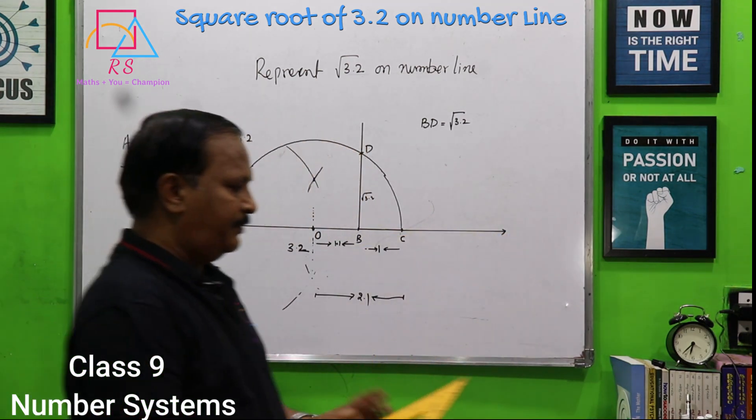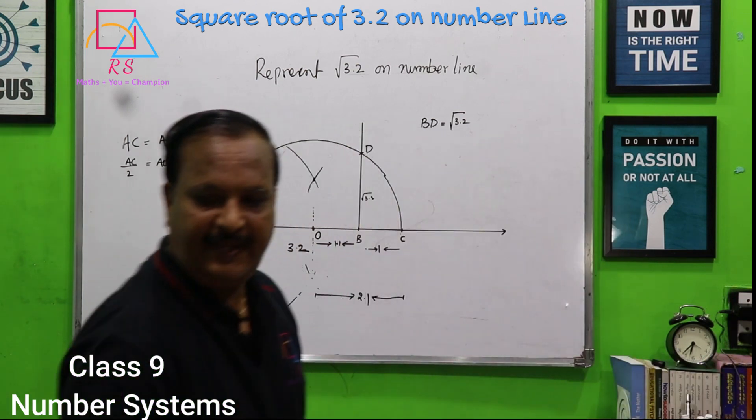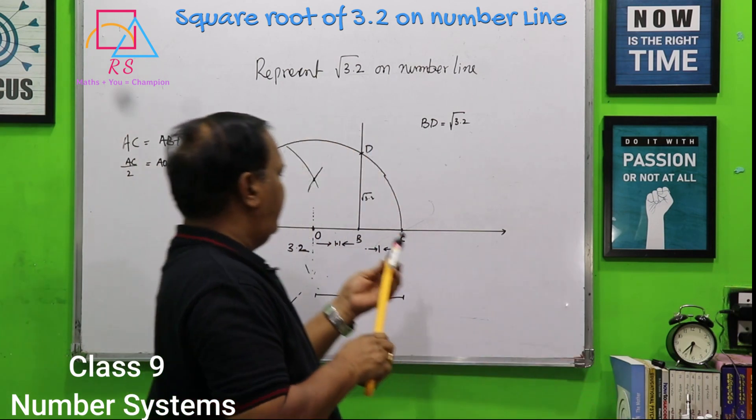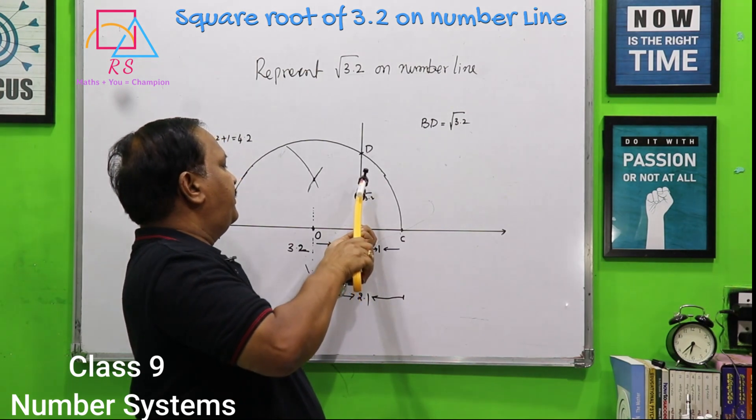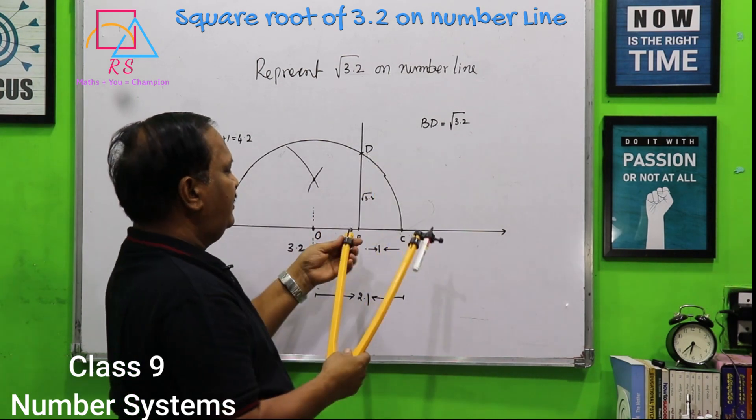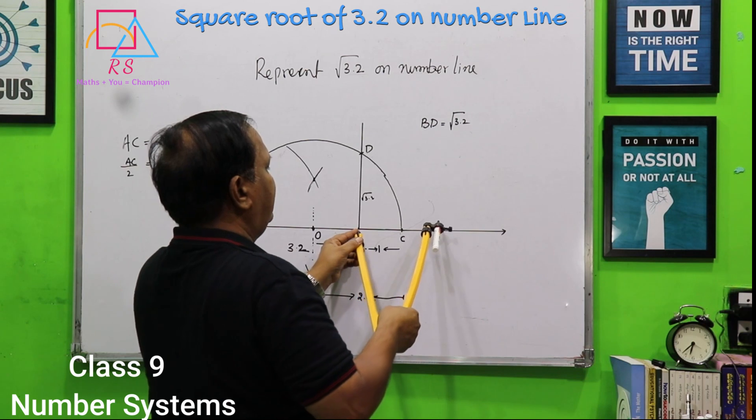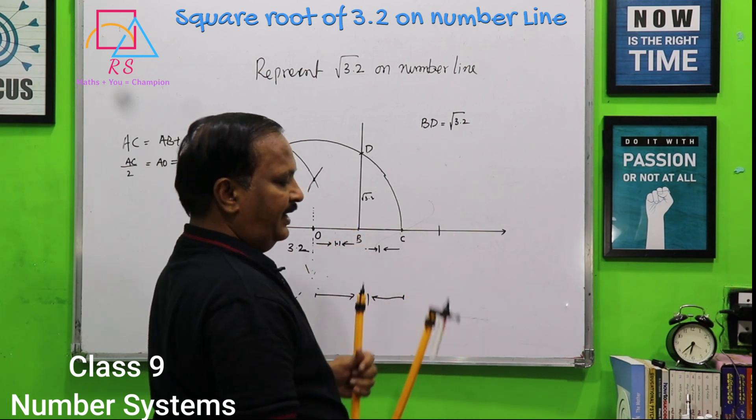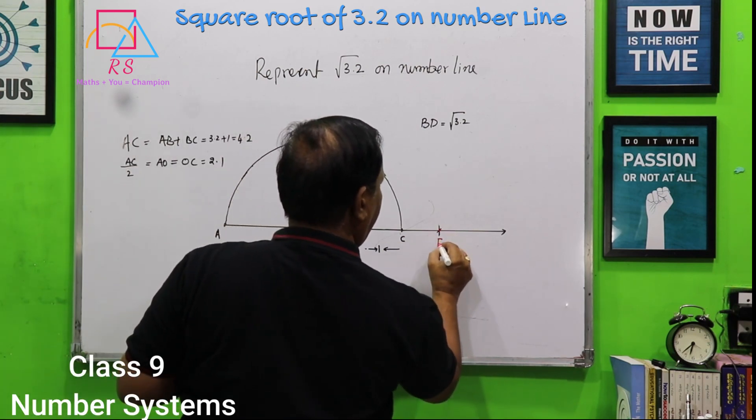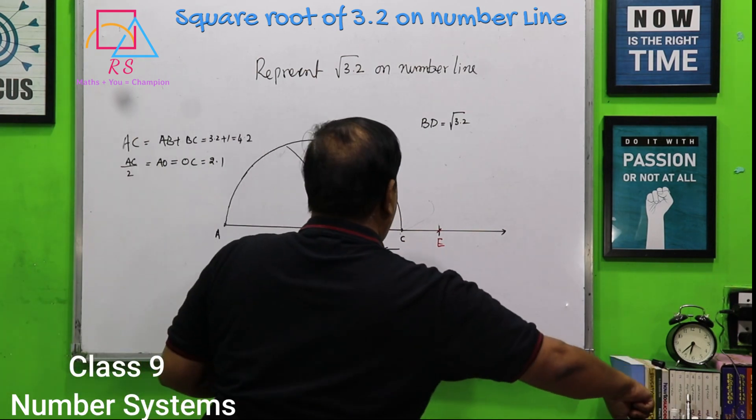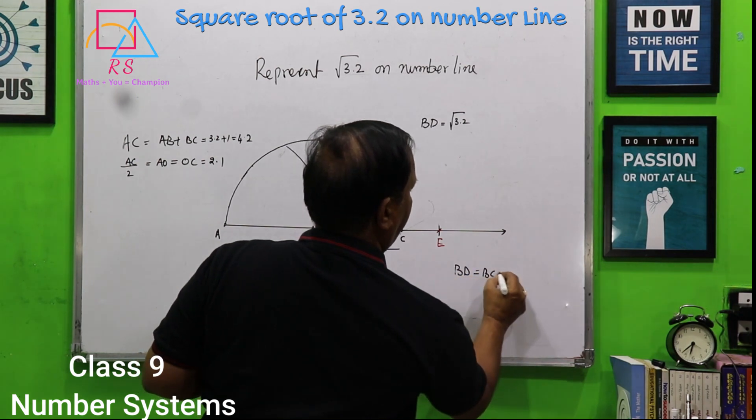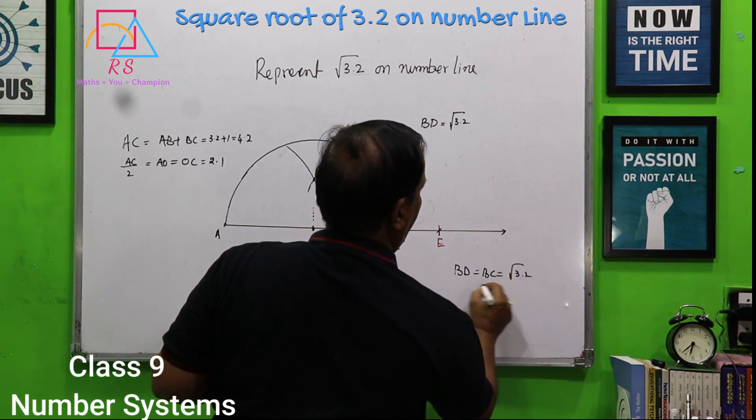And then after extending, again take compass. Measure BD with compass. And then from B draw an arc on the extended line. This is, let us say E. And then BD is equal to BE is equal to square root of 3.2.